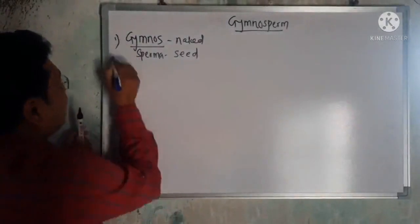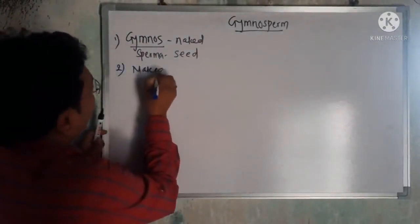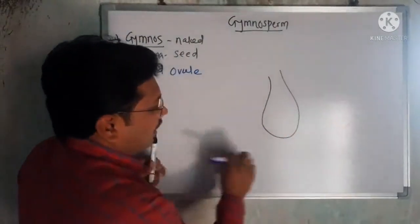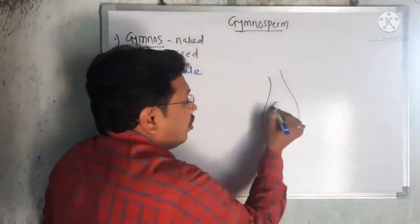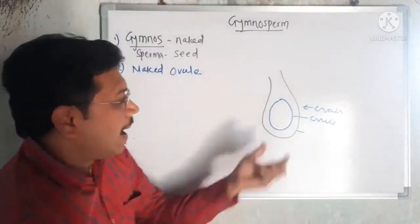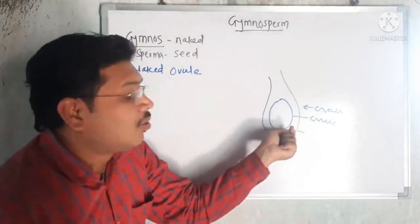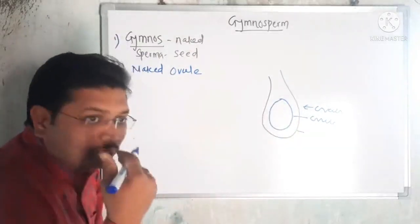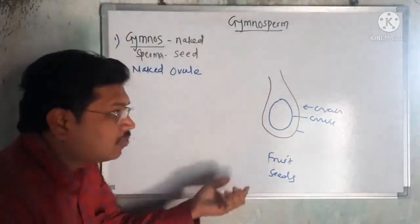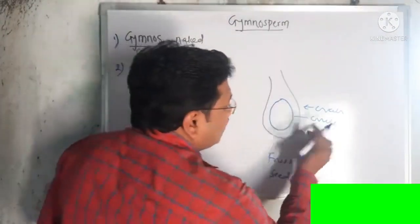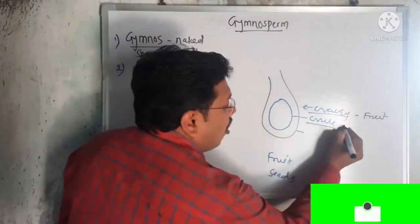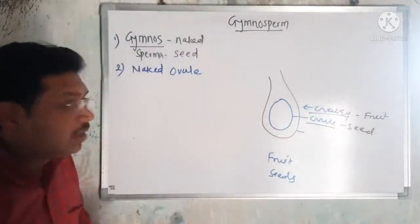In other words, gymnosperm means naked ovule. We know ovary and ovule are two different things. The ovule is formed inside the ovary — the outer part is the ovary, and inside it the ovule is present. Fruit is formed from the ovary, and seed is formed from the ovule.